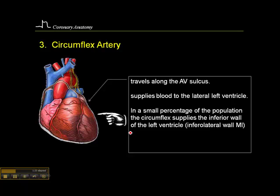When patients are left dominant — meaning the circumflex feeds the inferior wall — what you'll see on the electrocardiogram is an inferior lateral wall MI, because the inferior wall is fed by the circumflex, and so too is the lateral left ventricle. We'll see that pattern in a small percentage of the population.